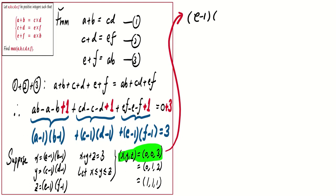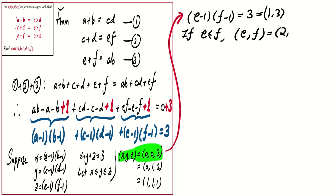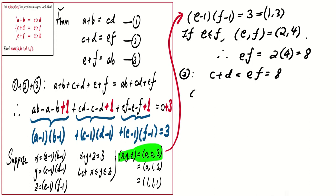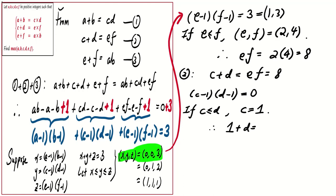For the first case, if x, y, z equals 0, 0, 3, it means (e minus 1)(f minus 1) equals 3, and since 3 equals 1 times 3 with e less than or equal to f, we get e minus 1 equals 1 and f minus 1 equals 3, so e equals 2 and f equals 4, giving e times f equals 8. From equation 2, c plus d equals ef equals 8. Since y equals (c minus 1)(d minus 1) equals 0, one factor must be zero, so c equals 1. Then 1 plus d equals 8, giving d equals 7.